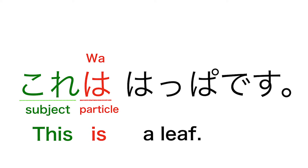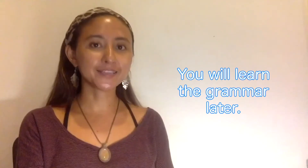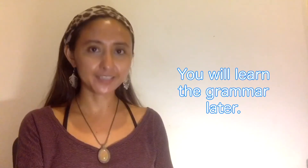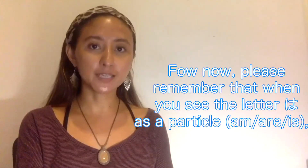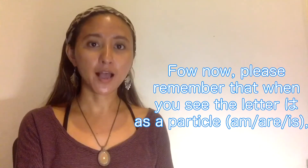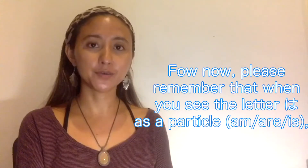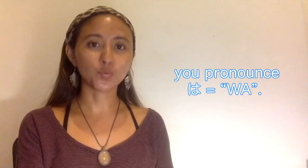In that sentence, 'this' is the subject, so the particle comes after 'kore,' which means 'this.' So 'kore wa' means 'this is.' You will learn the grammar later, but for now please just remember that when you see the letter は as a particle, you pronounce it 'wa.'